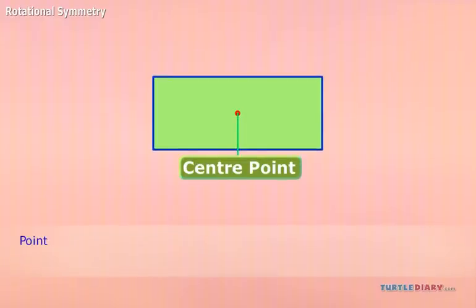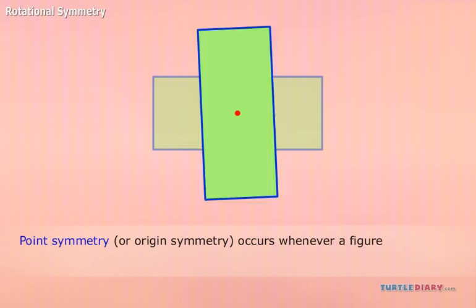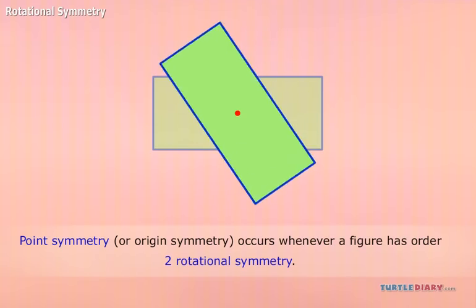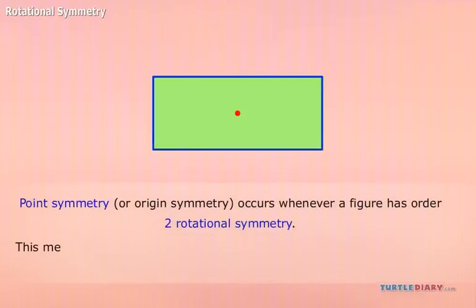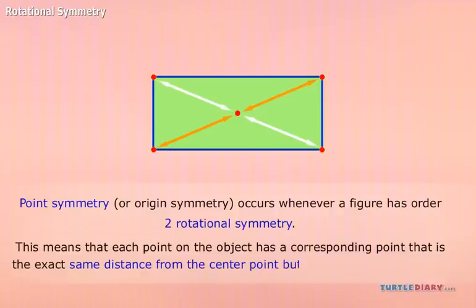Point symmetry, or origin symmetry, occurs whenever a figure has order two rotational symmetry. This means that each point on the object has a corresponding point that is the exact same distance from the center point, but in the opposite direction.